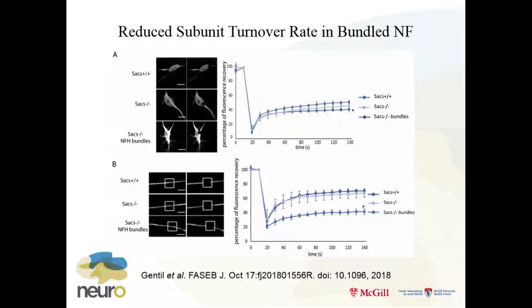Do the neurofilaments accumulate because they're not turning over? Benoit expressed GFP-NFH in neurons and did a photobleach study — he photobleached and then measured fluorescence recovery. He found that in the bundles, neurofilaments turned over more slowly. He didn't see much difference in areas where they weren't bundled, although Paul Chappell studying the same thing in fibroblasts found reduced turnover in non-bundled filaments as well. They may turn over more slowly, but the mechanisms must still be there.